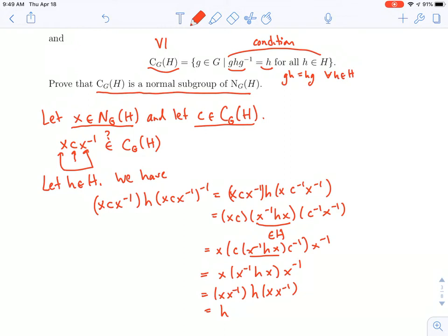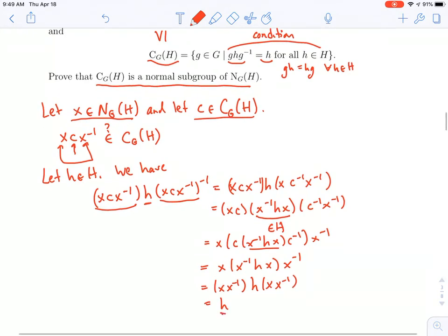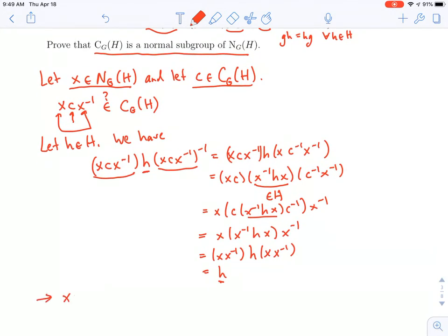So that means that I took this element, xcx inverse, I conjugated h by it, and I got back little h. And therefore, we conclude that xcx inverse centralizes h. And therefore, since we took an arbitrary element of the centralizer, we conjugate it by an arbitrary element of the normalizer, the centralizer is a normal subgroup of the normalizer. Thank you.